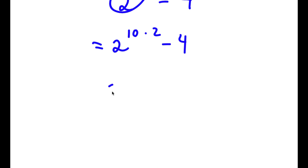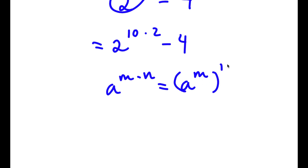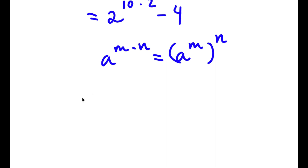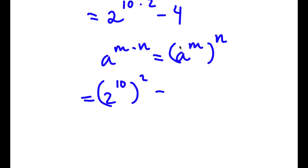If I have something in the form a to the power of m times n, this is equal to a to the power of m to the power of n. So 2 to the power of 10 times 2, I can rewrite as 2 to the power of 10 to the power of 2. Now 4, I can rewrite as 2 squared.